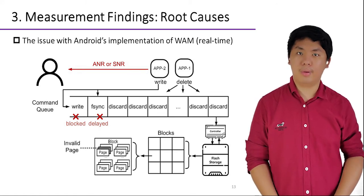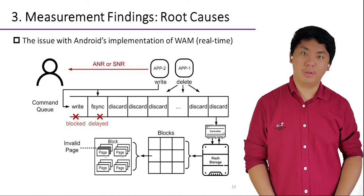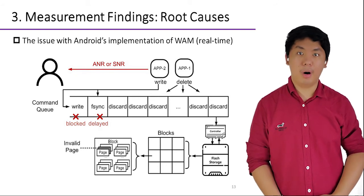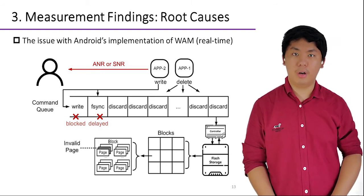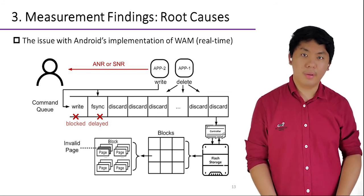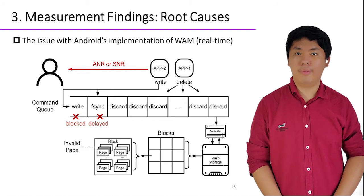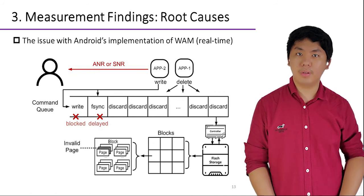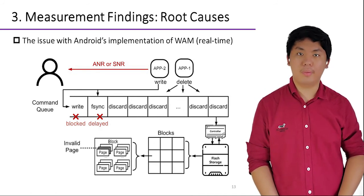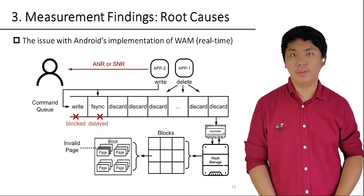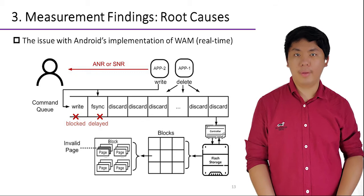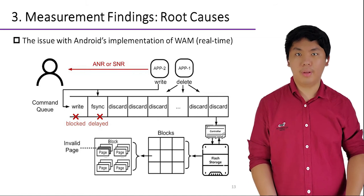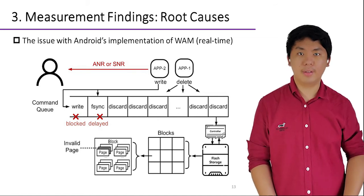According to our measurement, around 20 GB of data are deleted per day on a common device, incurring a large number of discards. Theoretically, this shouldn't be a problem since discard is designed to be asynchronous. In practice, however, a special synchronous command called fsync is often issued before write or read to ensure data consistency between memory and storage. The specialty of fsync lies in that its execution requires the completion of all preceding discards. Therefore, as shown in the figure, when app1 issues a bunch of discards, app2's fsync and subsequent write commands could be blocked for a long time, leading to ANR or SNR.